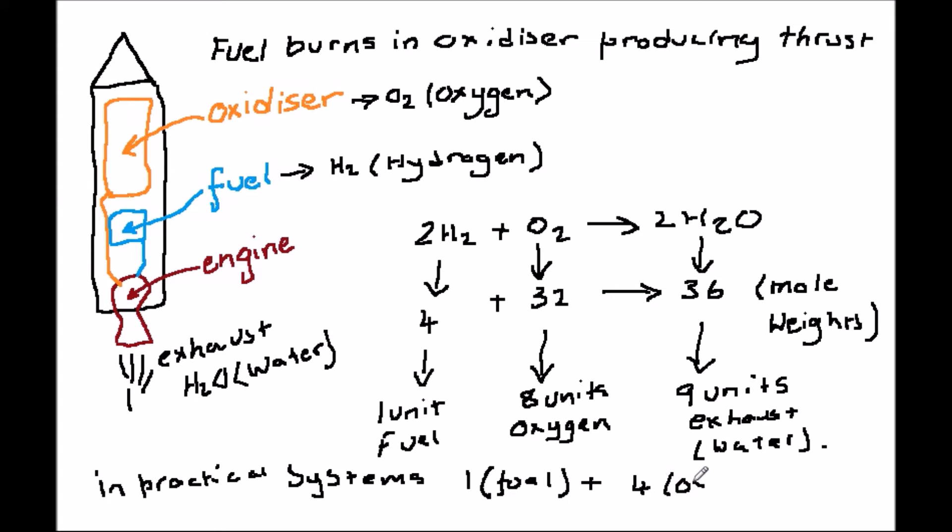In actual fact, the ratio used in real rockets is closer to 4 to 1. In other words, the mixture is fuel rich. This is done for practical reasons. But even so, the liquid weight to be carried on the vehicle of fuel is only one quarter of that of the oxygen which burns it.